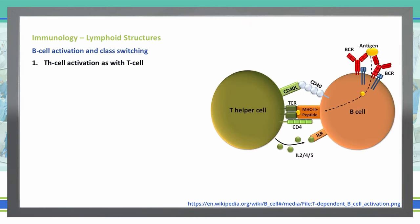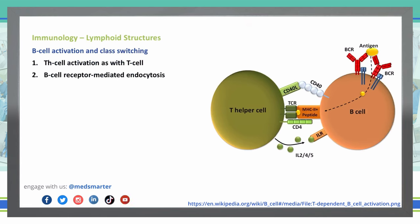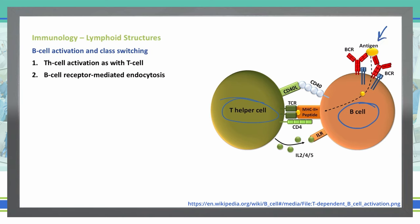So what happens first? Our T helper cell is going to be activated as T cell activation occurs, and then B cell receptor-mediated endocytosis occurs. We're taking that activated T helper cell and activating our B cell by presenting an antigen to it, which will endocytose that particular antigen into the cell.